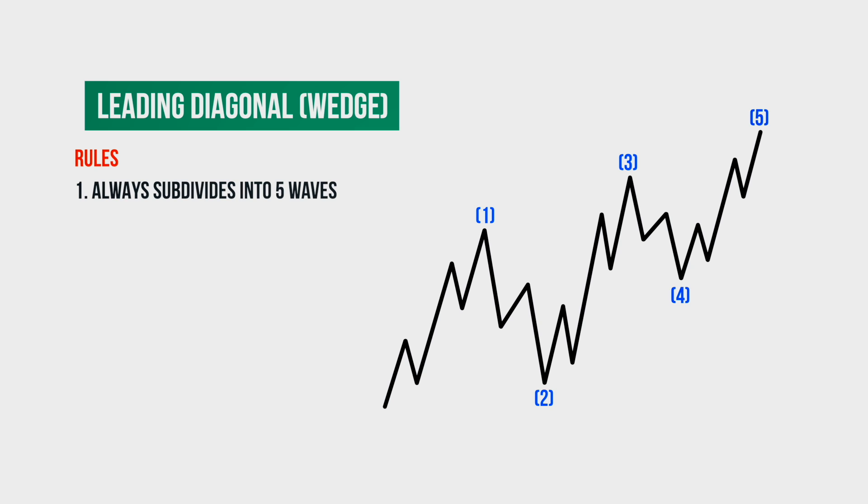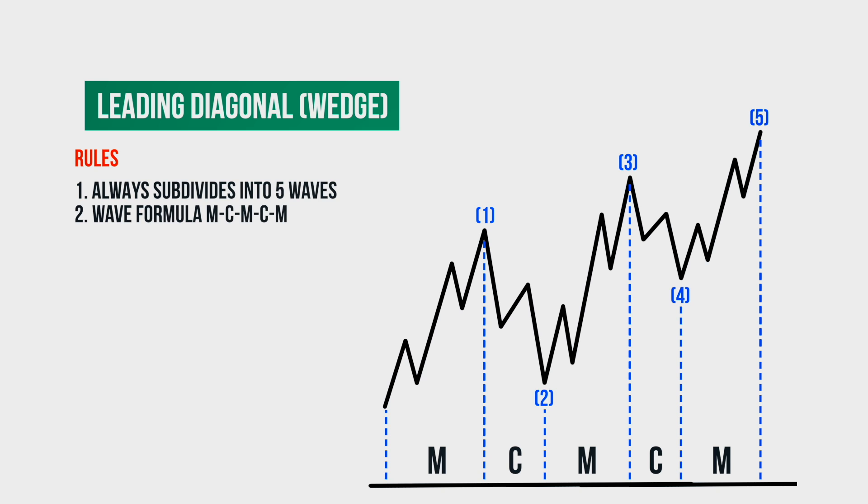As for the internal structure of the waves of the leading diagonal, it is similar to the impulse. That is, the first wave of the leading diagonal is the motive, the second corrective, the third motive, the fourth corrective, and the fifth wave is again motive. Thus, the wave formula of the leading diagonal is M-C-M-C-M.